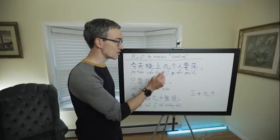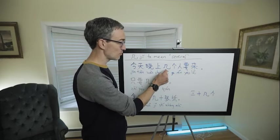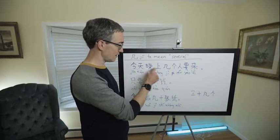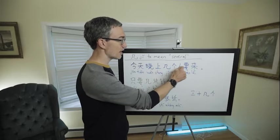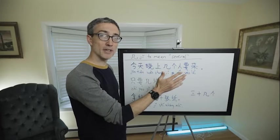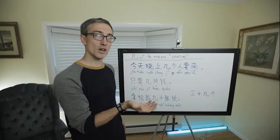Now here, if it's a question mark, then this 几 - 今天晚上几个人要来 (jīntiān wǎnshang jǐ ge rén yào lái) - how many people are going to come? How many people are going to come this evening? That's what it would be if it's a question. But if it's a statement, it means that this evening several people are coming.